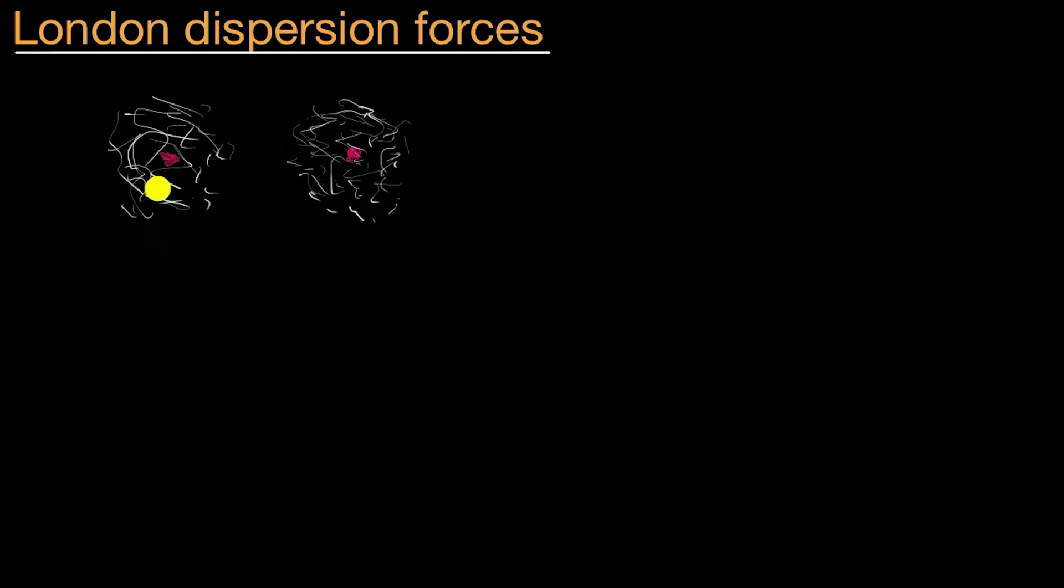And the way to think about it is, electrons are constantly jumping around probabilistically. They're in this probability density cloud, where an electron could be anywhere at any given moment, but they're not always going to be evenly distributed. You can imagine that there is a moment where that left atom might look like this, just for a moment, where slightly more of the electrons are spending time on the left side of the atom than on the right side.